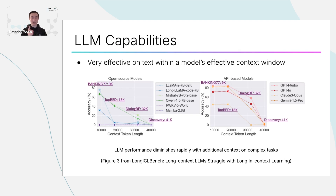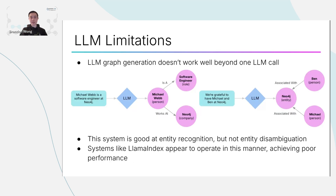In my experience, the effective context window for text-to-graph generation is around a few thousand tokens — pages, but not books. And that does not include the prompt, which may have to be quite extensive, so we have even less room to work with when it comes to how much text we can process. But what if we don't just do this once? What if we do this multiple times? This is, of course, a great idea and one way to overcome the context window problem.